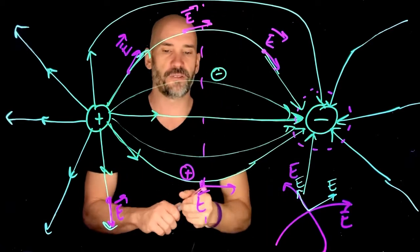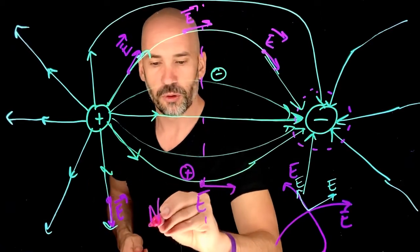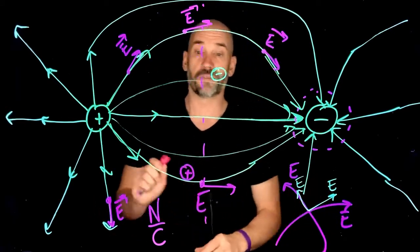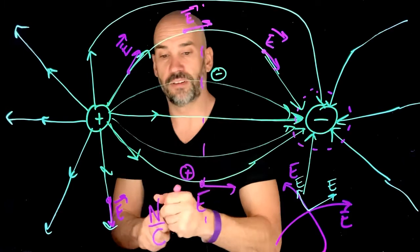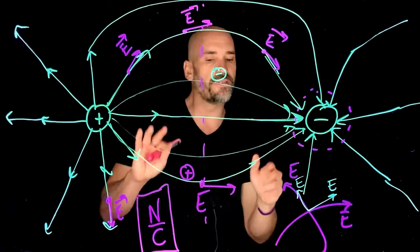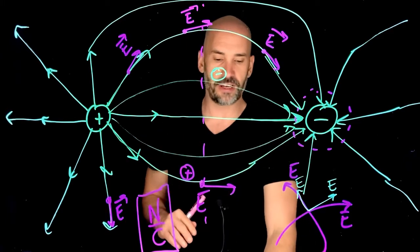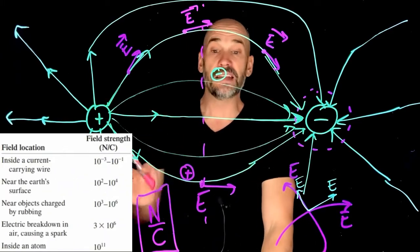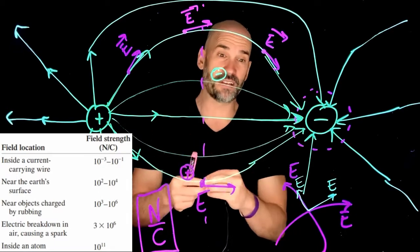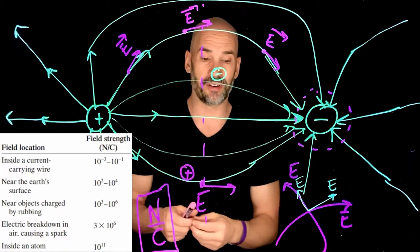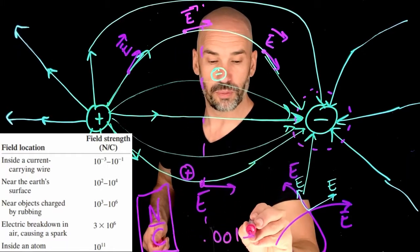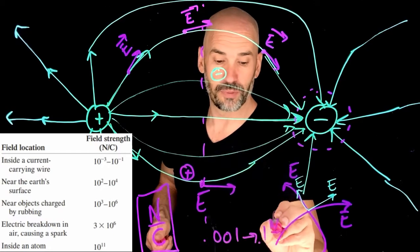All right. The units for electric field are newtons per coulomb. And you're going to see why that works out in a little bit when we talk about the equation. But for now, just know the units of electric field are newtons per coulomb. And on this slide right here, I have some typical values for electric field strengths. So inside of a wire, for example, it's pretty small electric field. There's not a super strong electric field in a typical wire. It's basically anywhere between 0.001 to 0.1 newtons per coulomb. Pretty small.